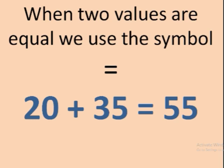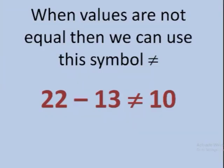For example, if it is 20 plus 35, we know they are equal, so we say 20 plus 35 is equal to 55. Or if it is not equal to, then this is the symbol for not equal. When values are not equal, we use this symbol — so 22 minus 13 is not equal to 10.